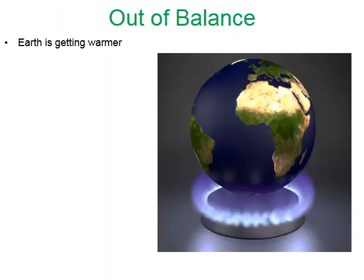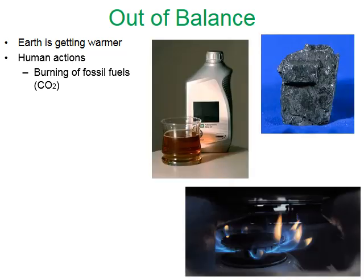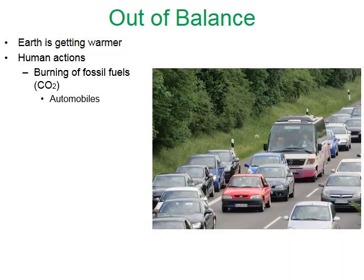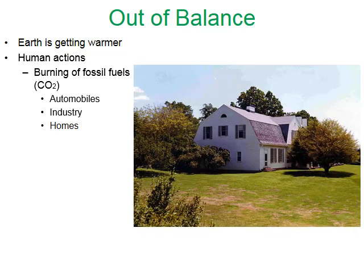What do I mean by the greenhouse effect being out of balance? The Earth is getting warmer — you've probably heard of climate change or global warming. It's out of balance because of human actions. The burning of fossil fuels such as coal, oil, and natural gas releases a lot of carbon dioxide into the atmosphere. This burning provides energy for automobiles, industry, and homes to produce electricity.